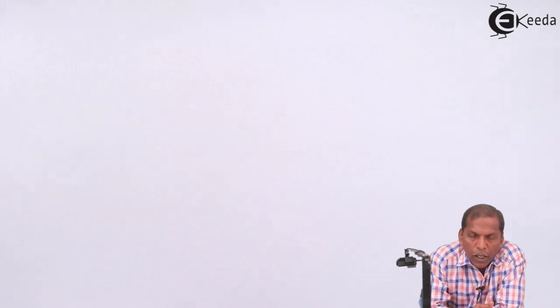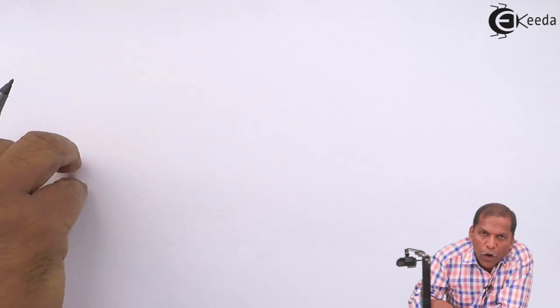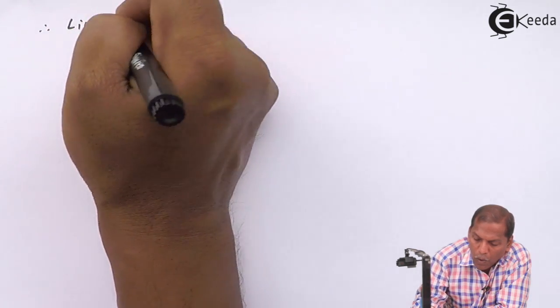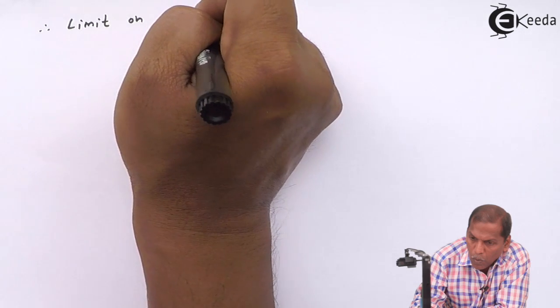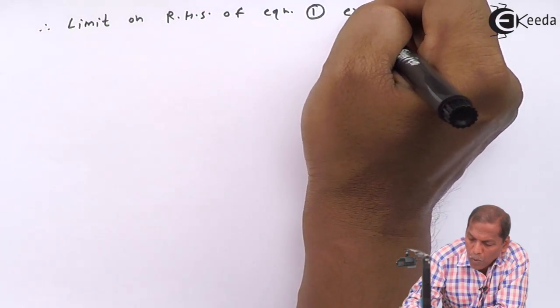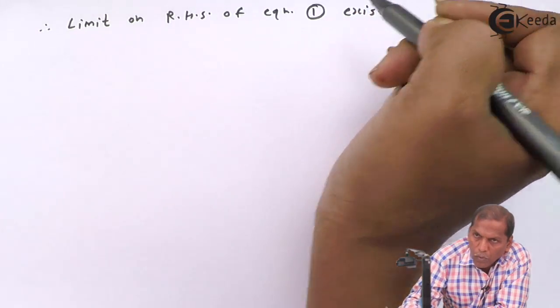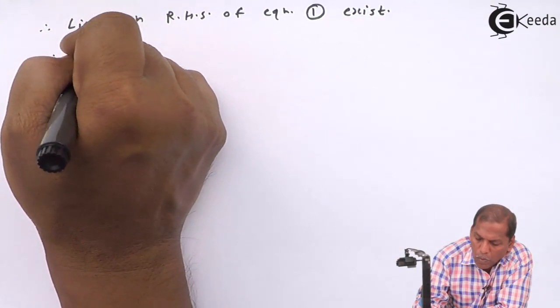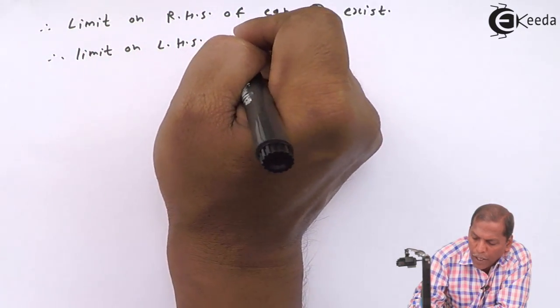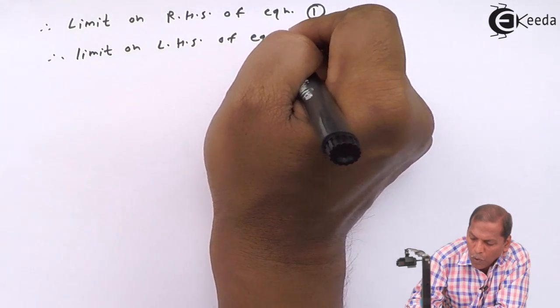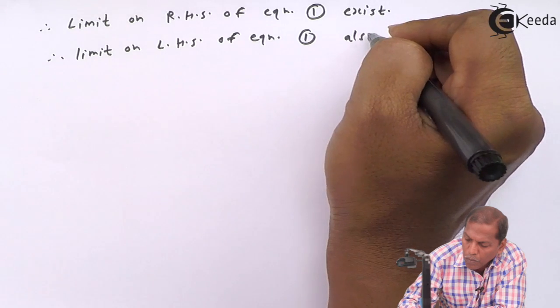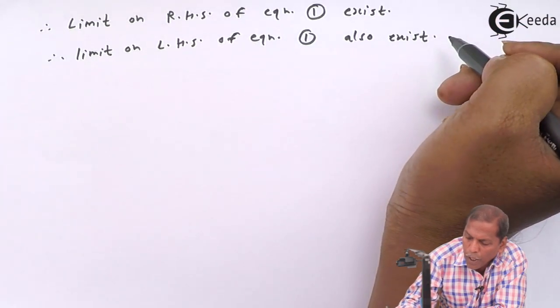It means the limit on the right hand side of equation 1 exists. Therefore, the limit on the left hand side of equation 1 also exists.